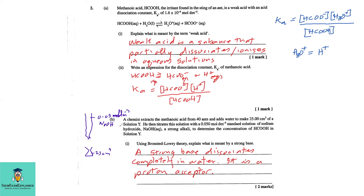Part b: A chemist extracts methanoic acid from 40 ants and adds water to make 25 cm³ of solution Y. He then titrates this solution with 0.05 mol/dm³ standard solution of sodium hydroxide, a strong alkali, to determine the concentration of methanoic acid in solution Y. Part b1: